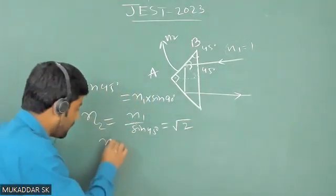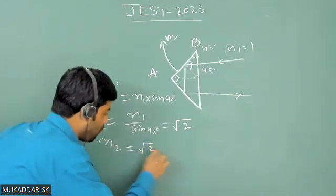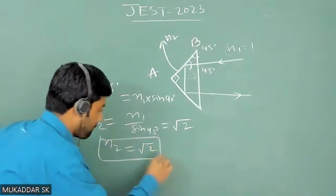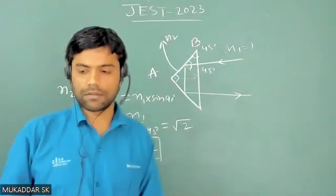So that refractive index of the prism will be √2. So this will be the answer. Thank you.